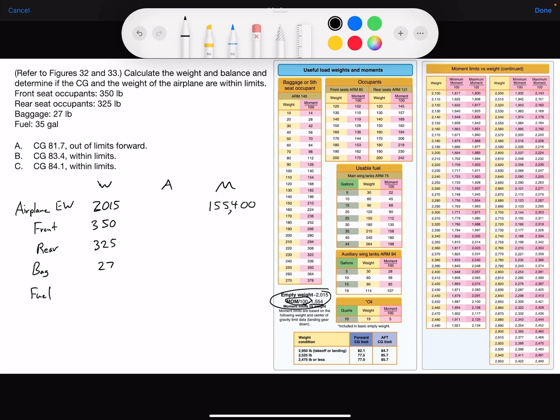And fuel, 35 gallons. Take 35 gallons, multiply it by 6 pounds per gallon. That gives you the weight of 210 pounds.